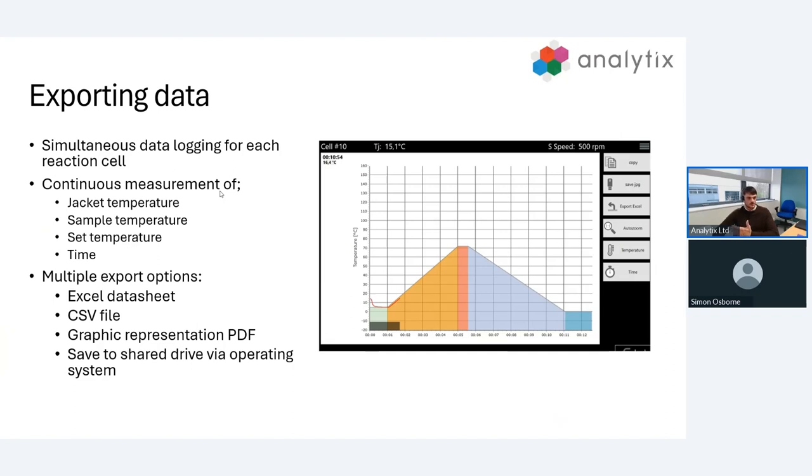Data recording is excellent, so we need to be able to export this and actually use it in the real world setting. We have multiple export options. We can export directly as an Excel sheet and open this directly in Excel. We can export as a CSV file or as a graphic representation via PDF. Rather than exporting by Excel and then making the graph yourself, you can export a graph very similar to the one on the screen now. You can modify this using the software. Also, as we're using Windows 10, you can save it directly to the system in a folder and access all runs at a later date.